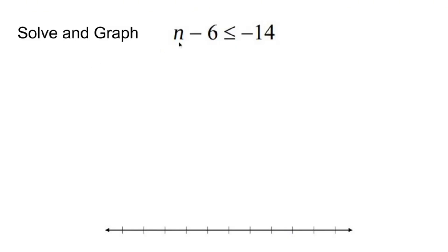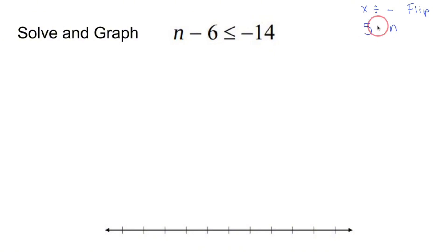Solve and graph: n minus 6 is less than or equal to negative 14. In order to solve an inequality, remember two things: if you multiply or divide by a negative, you flip the sign; and if your variable is on the right — like if you end up with 5 is greater than n — just flip everything: n is less than 5. That's not going to happen here, but these are important rules. The rest is just like solving a regular equation.